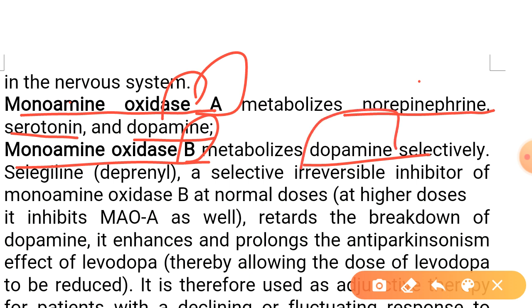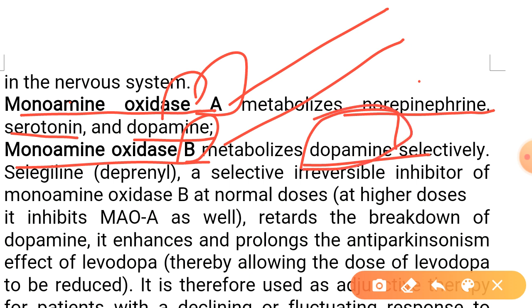So what do you think — in the case of treatment for Parkinson's disease, which type of drug do you prefer? Drugs which inhibit monoamine oxidase A, or drugs which inhibit monoamine oxidase B? Definitely you will prefer the drug which selectively blocks the metabolism of dopamine, and that is the monoamine oxidase B inhibitor.